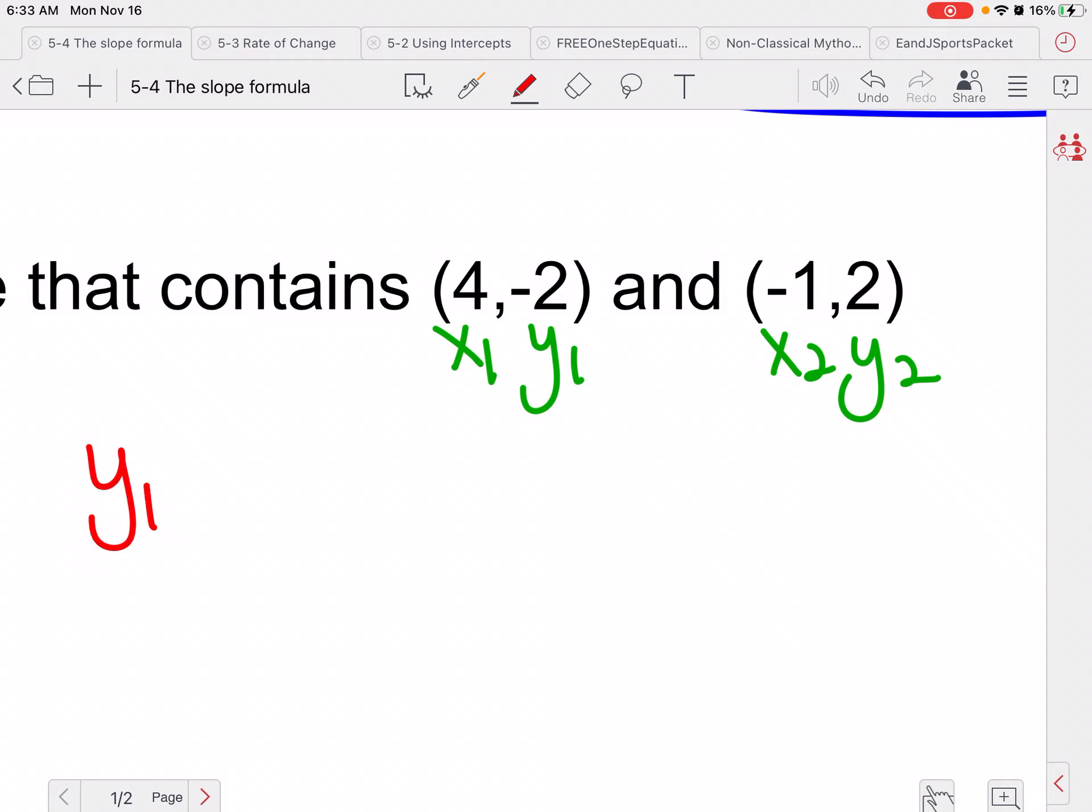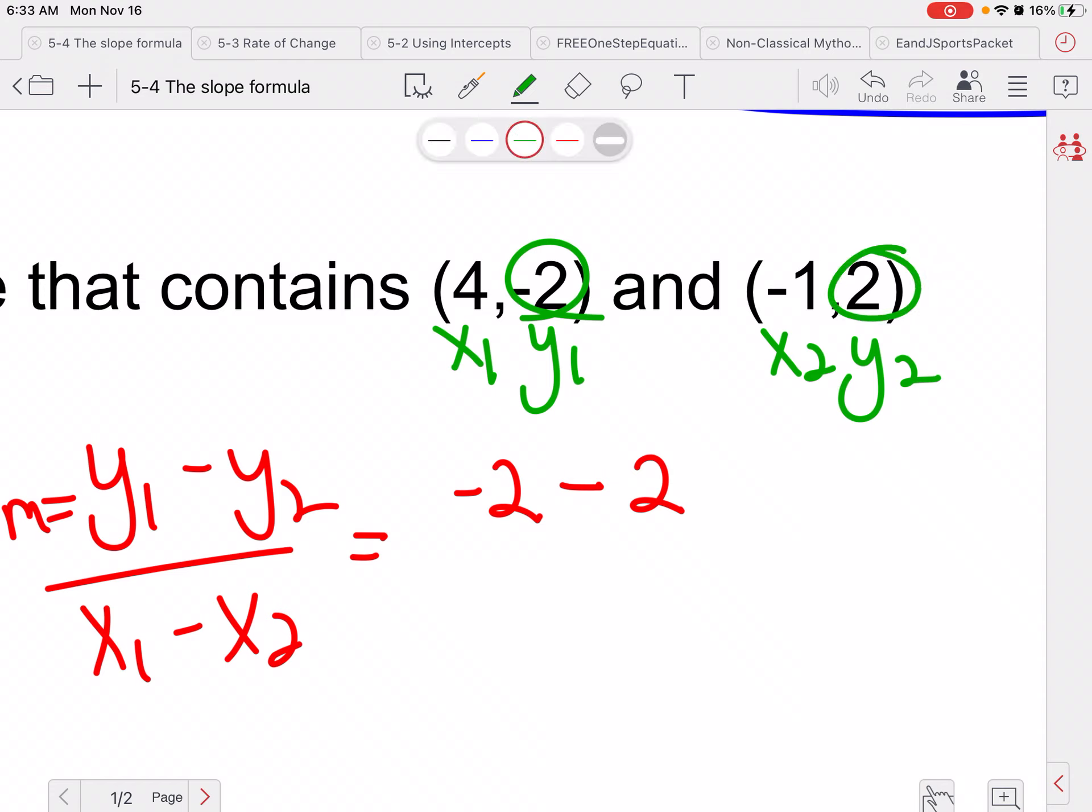And again, remember our slope formula is m equals y1 minus y2 over x1 minus x2. So y1 is going to be negative 2, y2 is going to be 2. So all I did was pull these two down, and make sure you're taking the proper sign. x1 is positive 4, I apologize, minus negative 1.